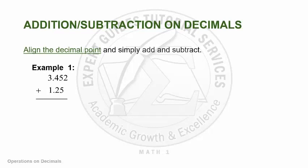Suppose you have 3.452 plus 1.25. The first thing we do is align the decimal points of 3.452 and 1.25 in a vertical fashion, and then we perform the operation. Adding, you get 4.702. Note also that this applies no matter how many decimal numbers you are adding — whether 5, 10, or 15 decimal numbers. As long as you align all their decimal points in a vertical fashion, then you are good to go.